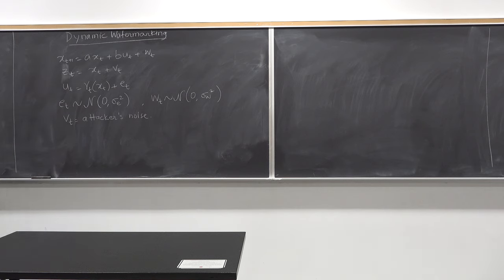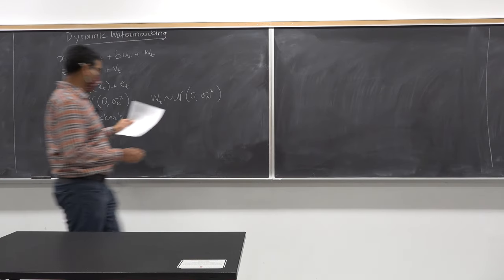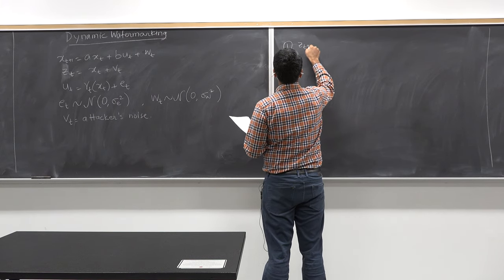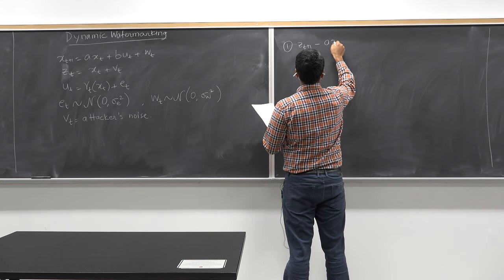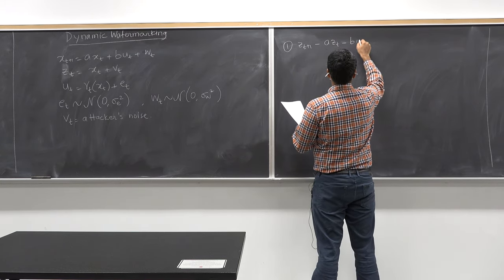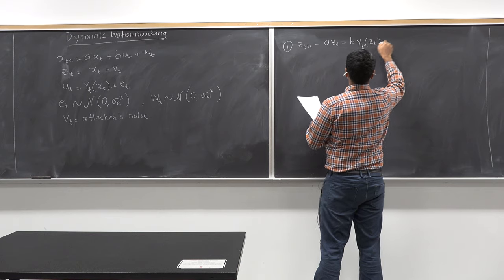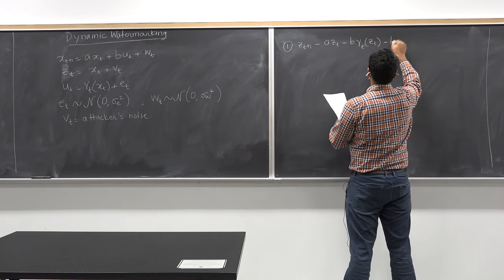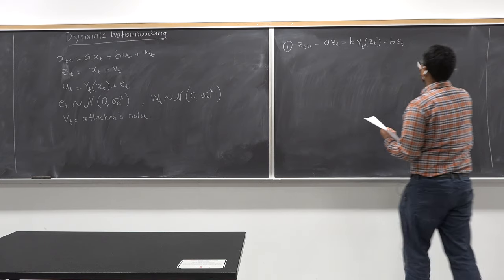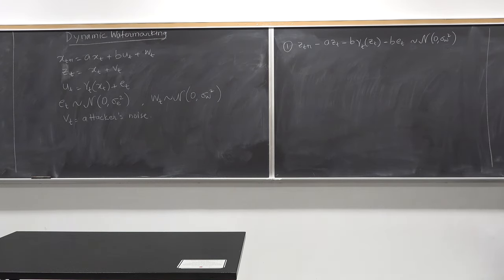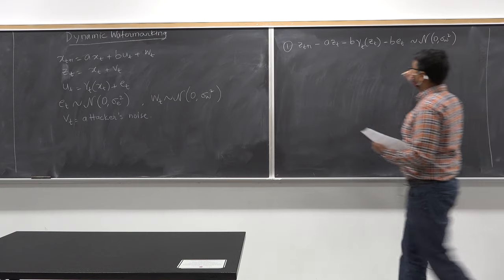In the previous class, we talked about two quantities. The first one was z_{t+1} minus a*z_t minus b*gamma_t*z_t minus b*e_t, and this is supposed to be distributed as Gaussian with mean zero and variance sigma squared under no attack.